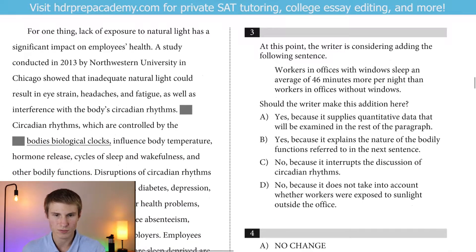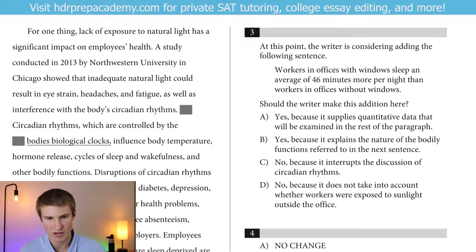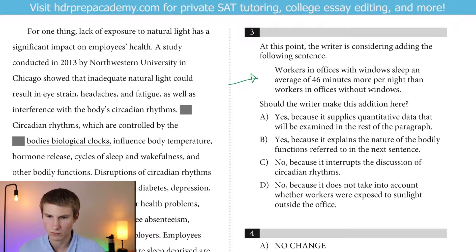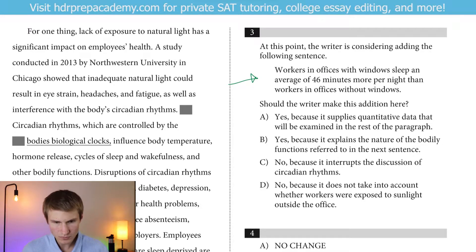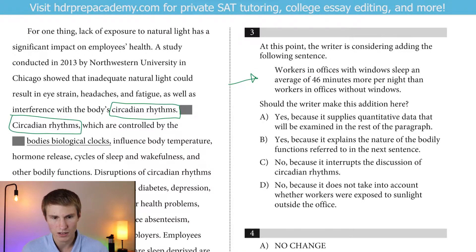For one thing, lack of exposure to natural light has a significant impact on employees' health. A study conducted in 2013 by Northwestern University in Chicago showed that inadequate natural light could result in eye strain, headaches, and fatigue, as well as interference with the body's circadian rhythms. At this point, the writer is considering adding the following sentence: 'Workers in offices with windows sleep an average of 46 minutes more per night than workers in offices without windows.' I'm immediately noting I just talked about circadian rhythms — I'm talking about it again, and I don't really want to interrupt that.